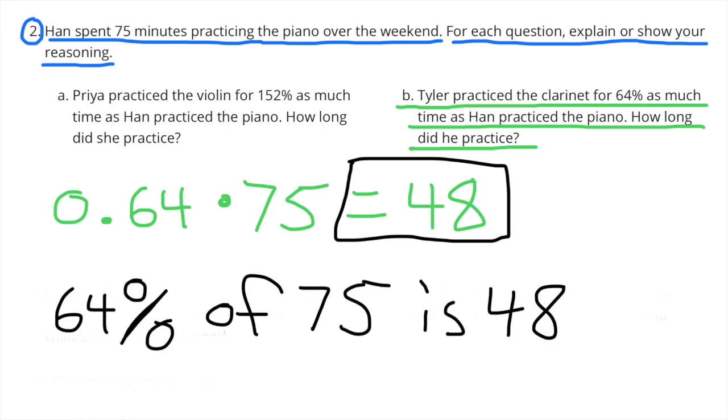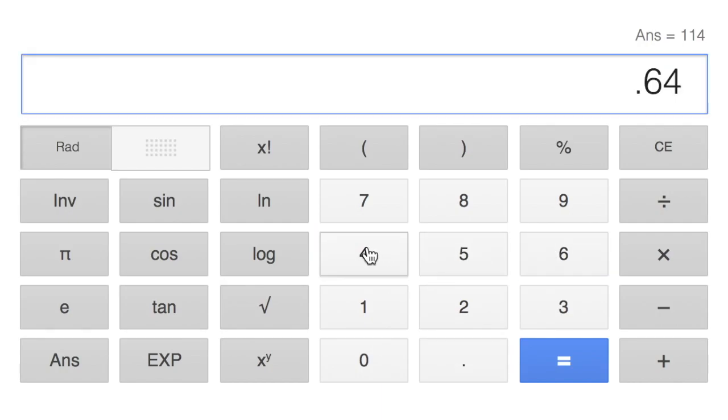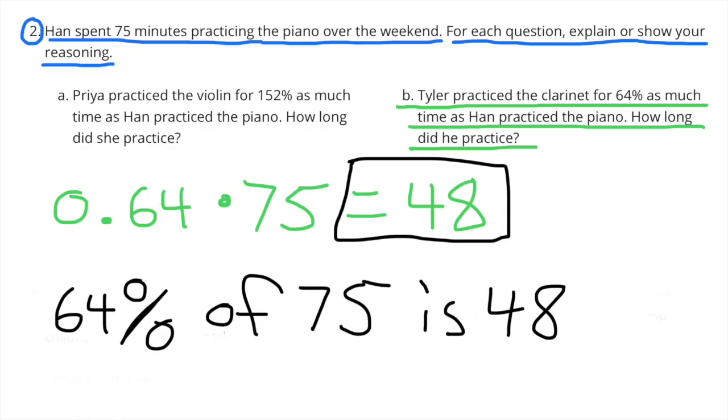Part B. Tyler practiced the clarinet for 64% as much time as Han practiced the piano. How long did he practice? 64% times 75 equals 48. Han practiced for 48 minutes.